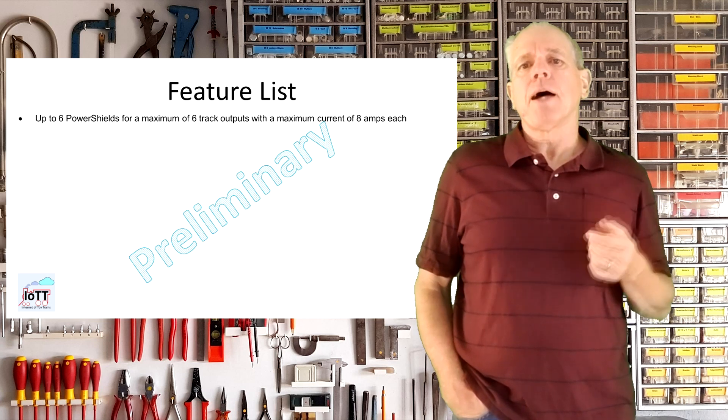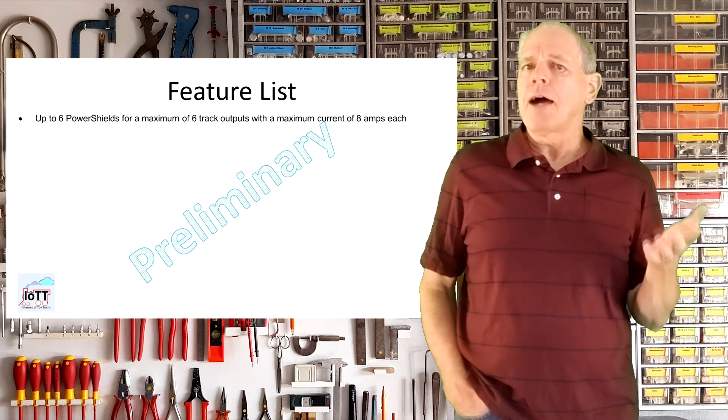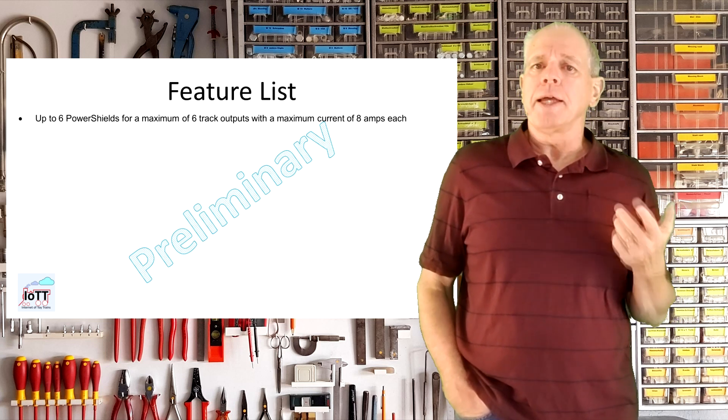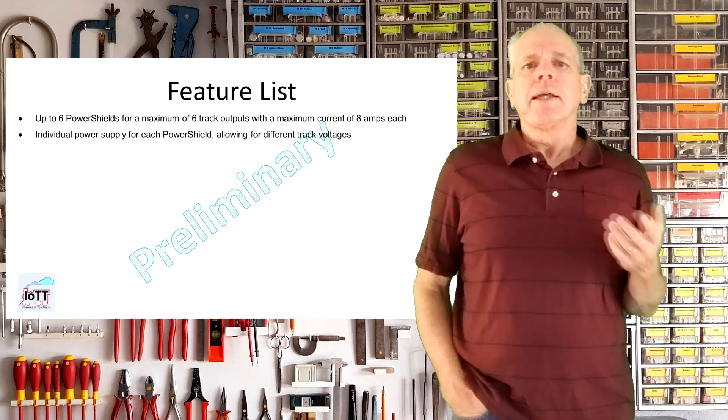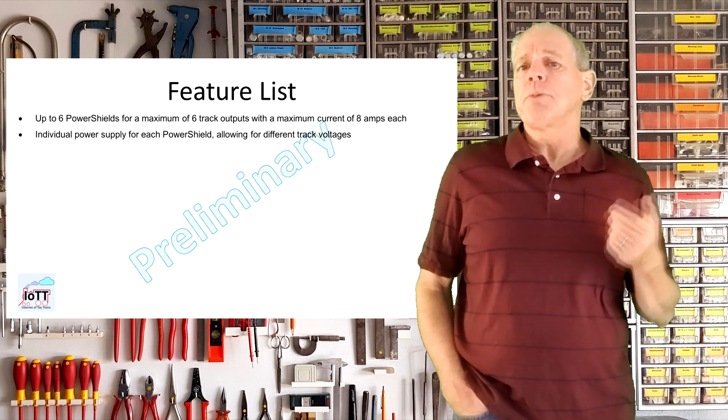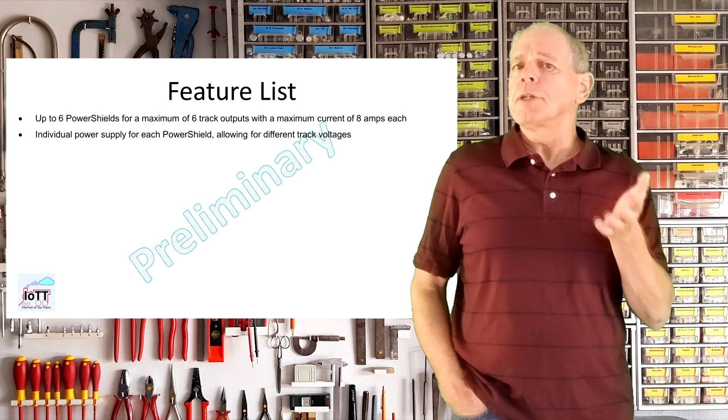Up to 6 power shields can be stacked allowing for a maximum of 6 track outputs with a maximum current of 8 amps each. There is the possibility to use individual power supplies for each power shield even with different supply voltages.